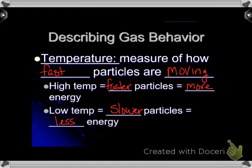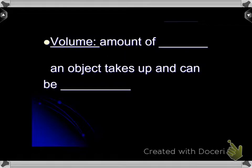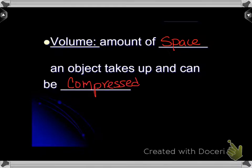If there's a low temperature, you can suspect the opposite - there's going to be slower particles and there's going to be less energy. High temperature equals faster particles equals more energy. Low temperature equals slower particles equals less energy. That's how temperature affects gas.